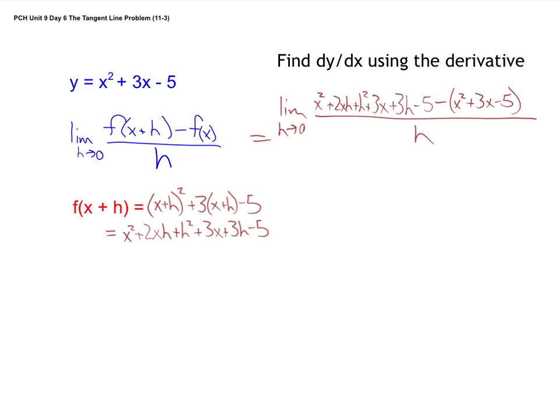All right, so now we look at simplifying this. And like we had said before, anything that does not have an h in it should cancel out. Now make sure you did it right so that actually happens. But notice here an x squared minus x squared, those cancel out. You have a 3x and a minus 3x, those cancel out.